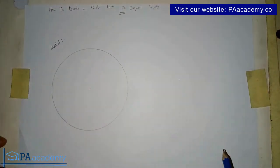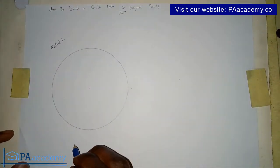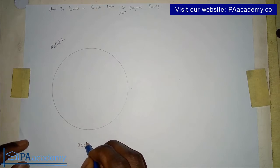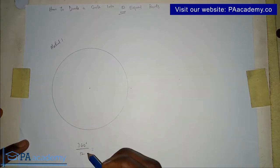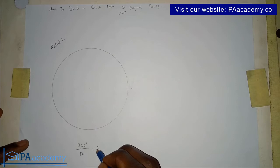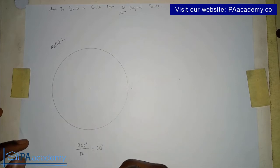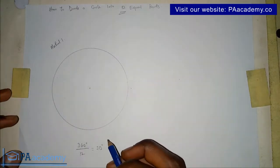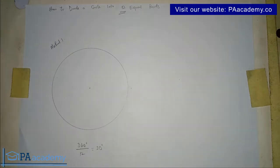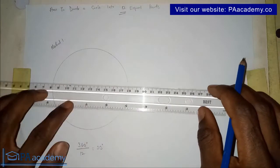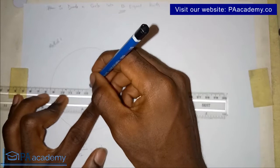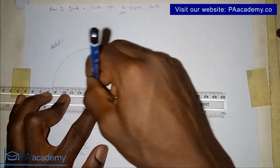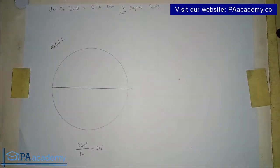For Method One: the total angle in a circle is 360 degrees. If we divide 360 degrees by 12, that gives us 30 degrees. So each part of the circle will be 30 degrees apart. Note this — 30 degrees. Now let's divide the circle in two by drawing the diameter, giving us two equal halves.